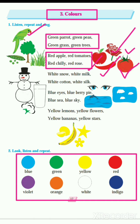Now the third color: white. White snow, white milk, white cotton, white silk. The next color given is white. White snow — there is a snowman. Then white milk in a glass. Then white cotton, and white silk — silk means you can also say thread. Other white things include white clouds, white chalk, and white pages.